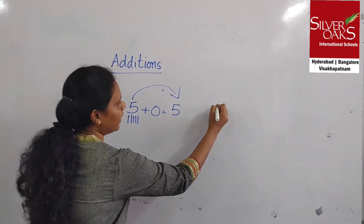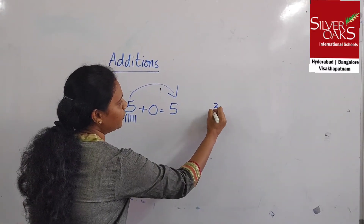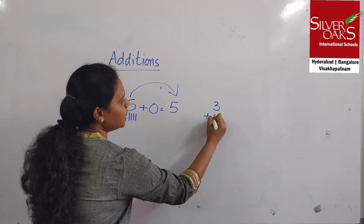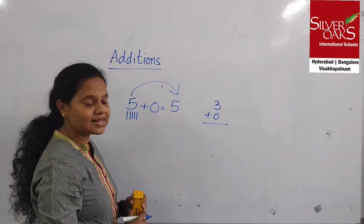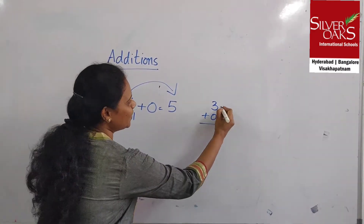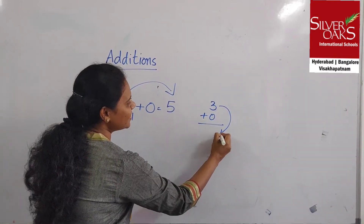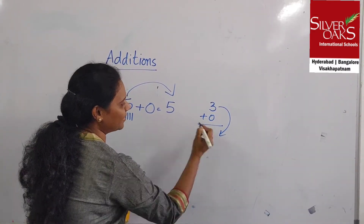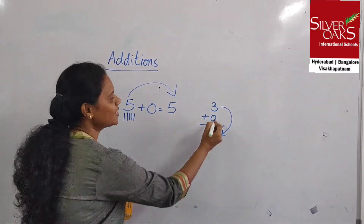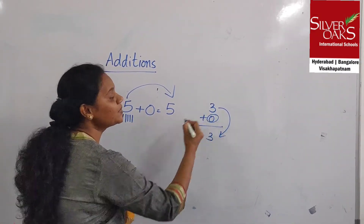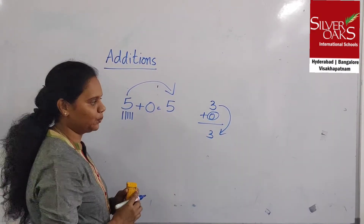That means we need to remember: any number if you add 0 to it, it will be the same number. Same way we can see for 3 plus 0 — what will be the answer? It will be the same number. This is concept 0.